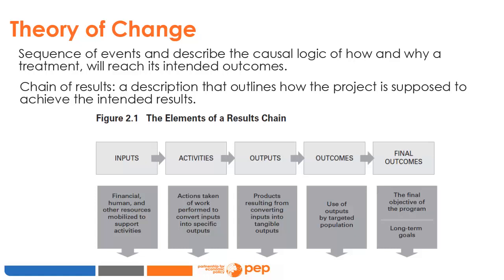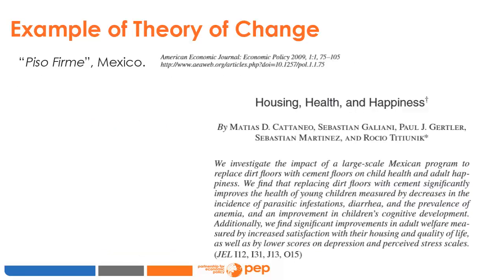The construction of a theory of change is an opportunity to strengthen the links between researchers evaluating the program, program administrators, policymakers, and stakeholders. All actors should collaborate to develop a common vision of the intervention, its goal, and the paths to achieve those goals. The evaluation of the program Piso Firme in Mexico can give you an idea of how a well-developed theory of change looks like.